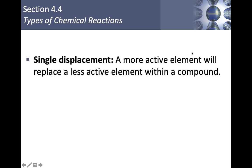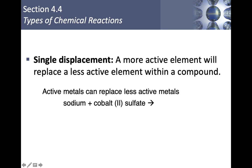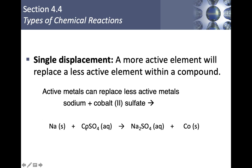Single displacement reactions: a more active element replaces a less active element within a compound, based on the activity series. Active metals can replace a less active metal — for example, sodium plus cobalt(II) sulfate: sodium pushes cobalt out, producing sodium sulfate (Na₂SO₄) and solid cobalt. Make sure to correctly balance the ionic compound — it's Na₂SO₄, not NaSO₄. Balanced: 2 Na (s) + CoSO₄ (aq) → Na₂SO₄ (aq) + Co (s).